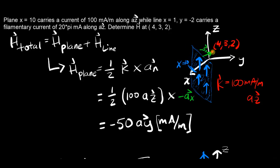So if this point was maybe at x equals 20, y equals 3, z equals 2, then this would be positive ax.